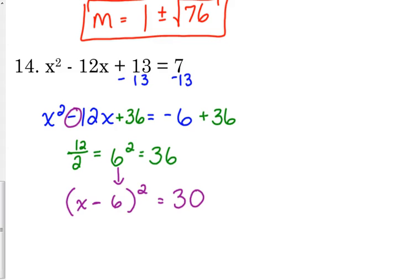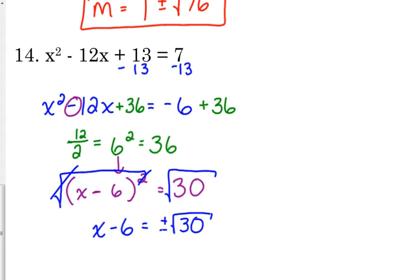Step 5. Take the square root of both sides. Don't forget the plus or minus. So the square root and the squared cancel. So we've got x minus 6 is equal to plus or minus square root of 30. 30 is not a perfect square. Just leave it under the square root. Last step is get the variable by itself. We're subtracting 6. So we need to add 6. So we get x equals 6 plus or minus the square root of 30.